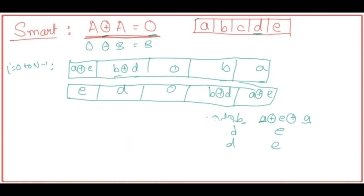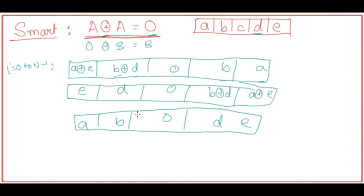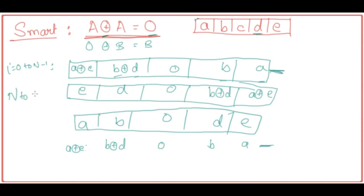Did you notice the pattern? After every 3 sets of N minus 1 iterations, the array repeats the same cycle. So the three patterns in the cycle are: the initial array (with middle zeroed), then the first transformed state, then the second transformed state, and then back again.